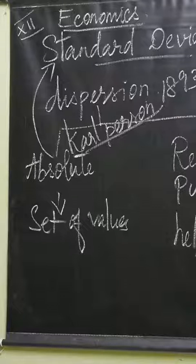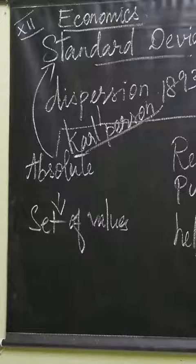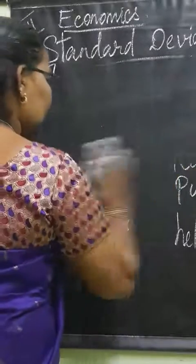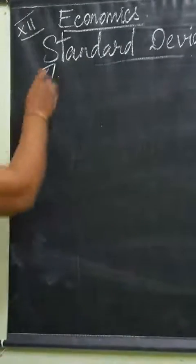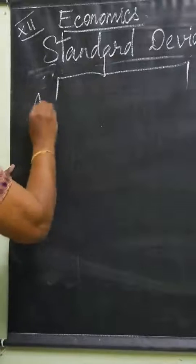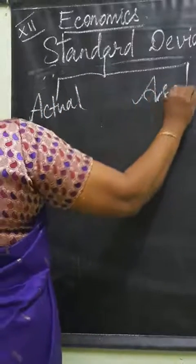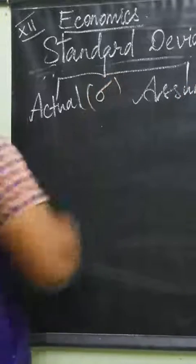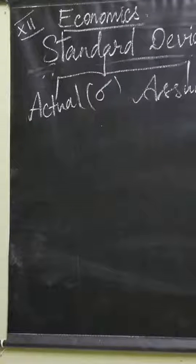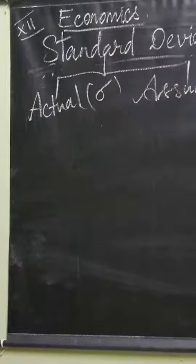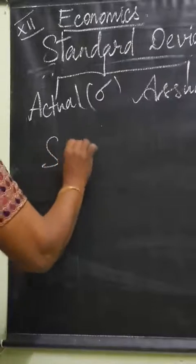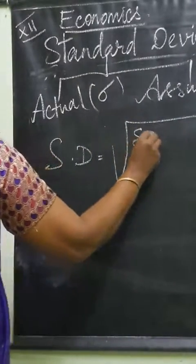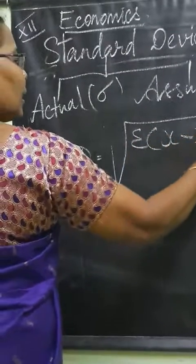In individual series, we calculate standard deviation using deviations taken from actual means and also deviations taken from assumed means. The formula for standard deviation is: sigma equals the square root of sigma (x minus x-bar) squared, divided by n.